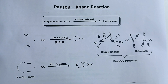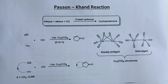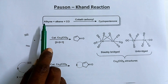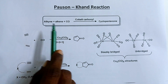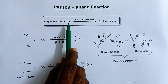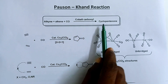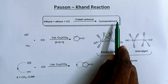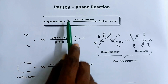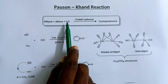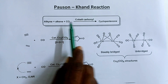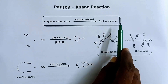Hello friends. In this video we are going to study about the Pauson-Khand reaction. An alkyne reacts with alkene and carbon monoxide, furnishing cyclopentenone. So the reactants are alkyne, alkene, and carbon monoxide, and the product is cyclopentenone.